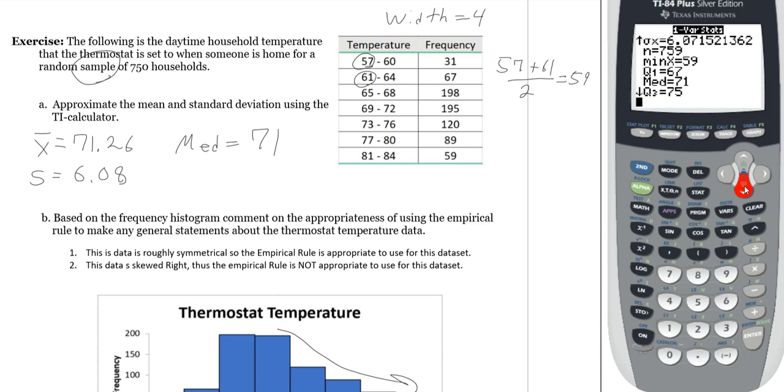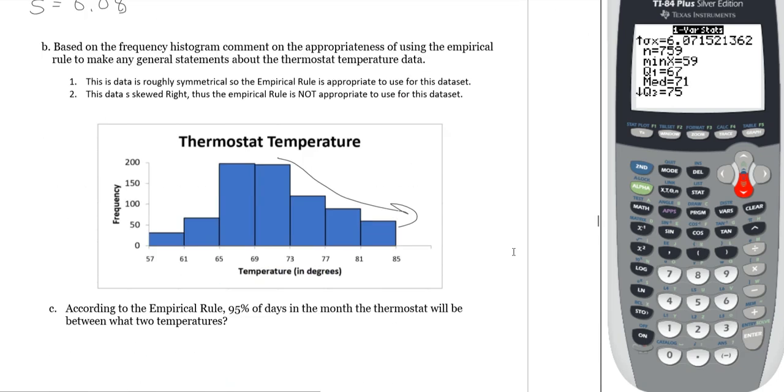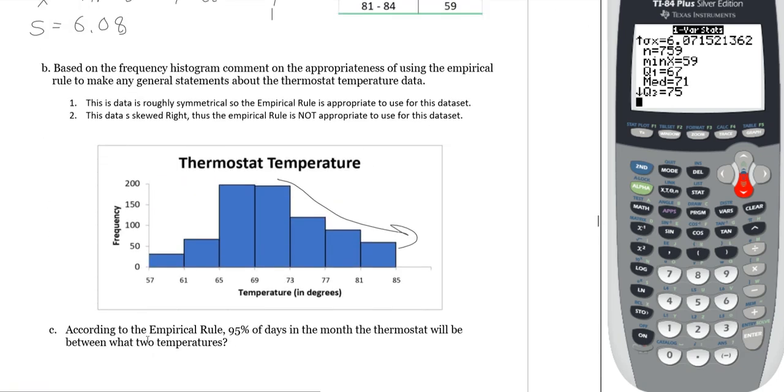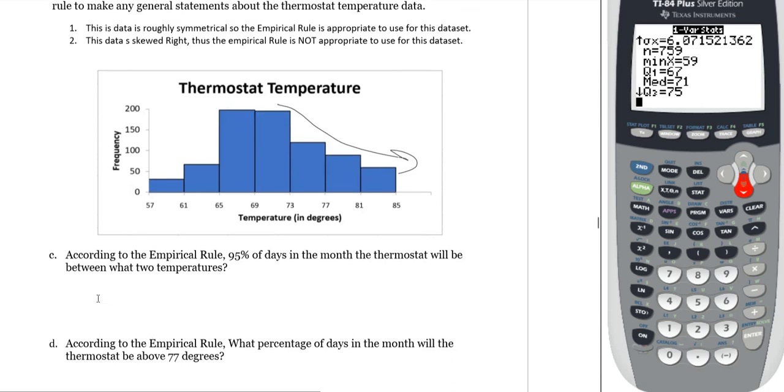So, you can always use the calculated data if you're unsure from the picture. Either way, we're going to answer a couple questions with the empirical rule. According to the empirical rule, 95% of days in the month, the thermostat will be between what two temperatures? Well, by the empirical rule, 95% means you go up and down two standard deviations.